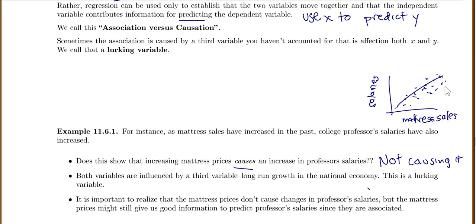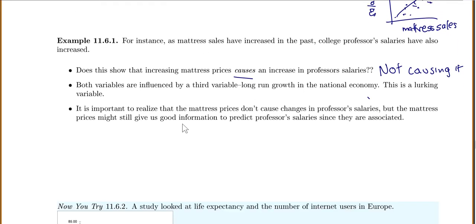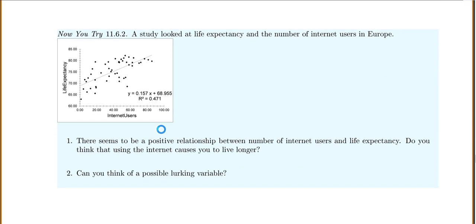So what happens is the economy goes up and it makes the mattress sales go up. But at the same time, when the economy goes up, the salaries go up. So it seems like they're associated and working together. Okay, there's a problem for you to try.